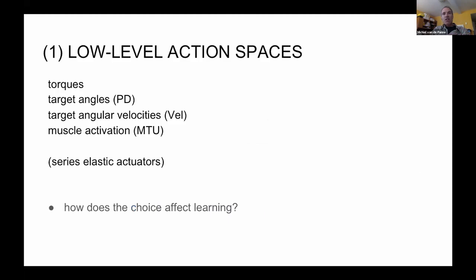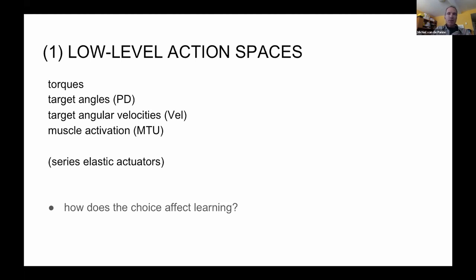I'm going to touch briefly on three topics. The first is just low-level action spaces. A lot of work in the reinforcement learning community assumes the environment comes as a given and that you're working with torques in some simulator, but there are many other things you can use — target angles for position control, target angular velocities, or muscles. So how does the choice of this low-level action space really affect modern policy gradient reinforcement learning algorithms?